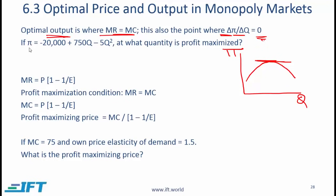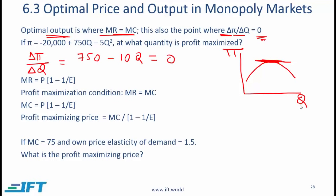If you are given the equation for profit, then the change in profit divided by change in quantity is given by — say — 750 minus 10q. We are taking the first differential here. We set this equal to zero because the change in profit over change in quantity is zero at the maximum, and from this you can determine that q equals 75. So this is another way of finding the profit-maximizing quantity if your profit function is given.